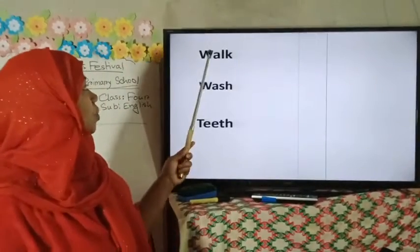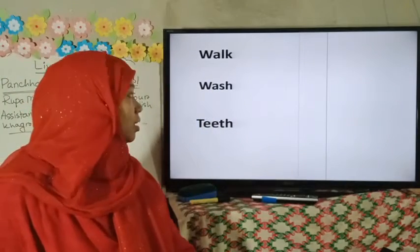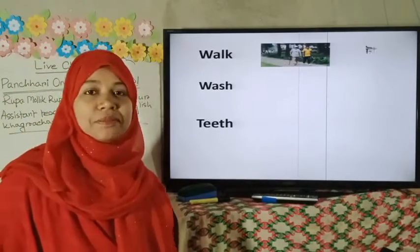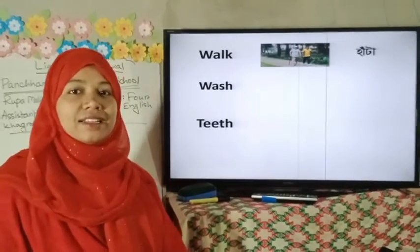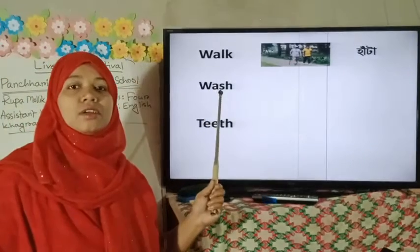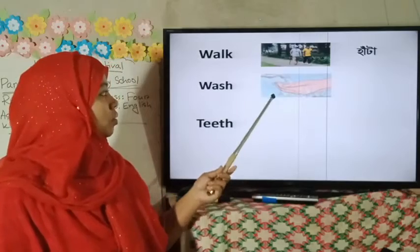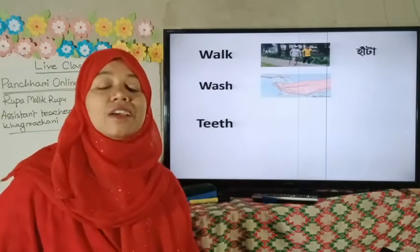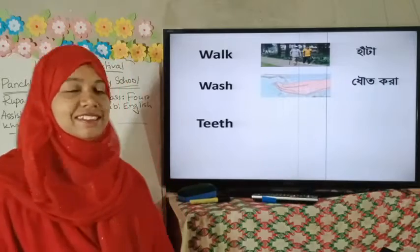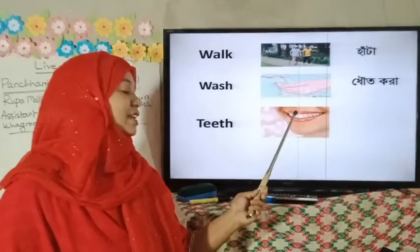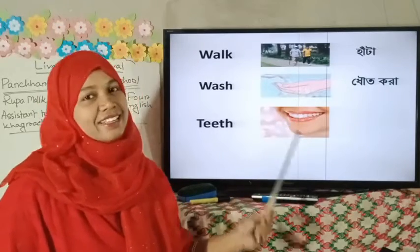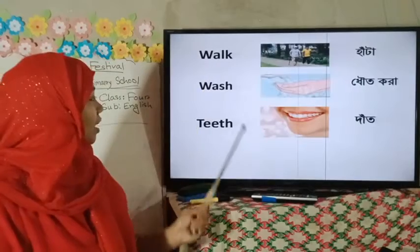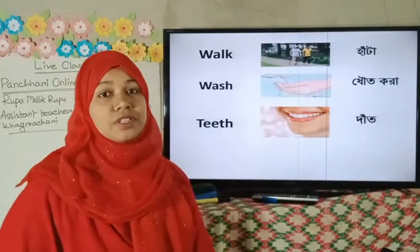Another word: walk. We can see someone is walking — some persons are walking. Walk means 'hata'. Wash — look at the picture, someone is washing his or her hands with water and soap. Wash means 'dhoto kora'. Then teeth — you can see a smiling mouth and here are teeth. Teeth means 'daat'. Dear students, I hope you are now introduced perfectly with these words and their Bengali meanings.